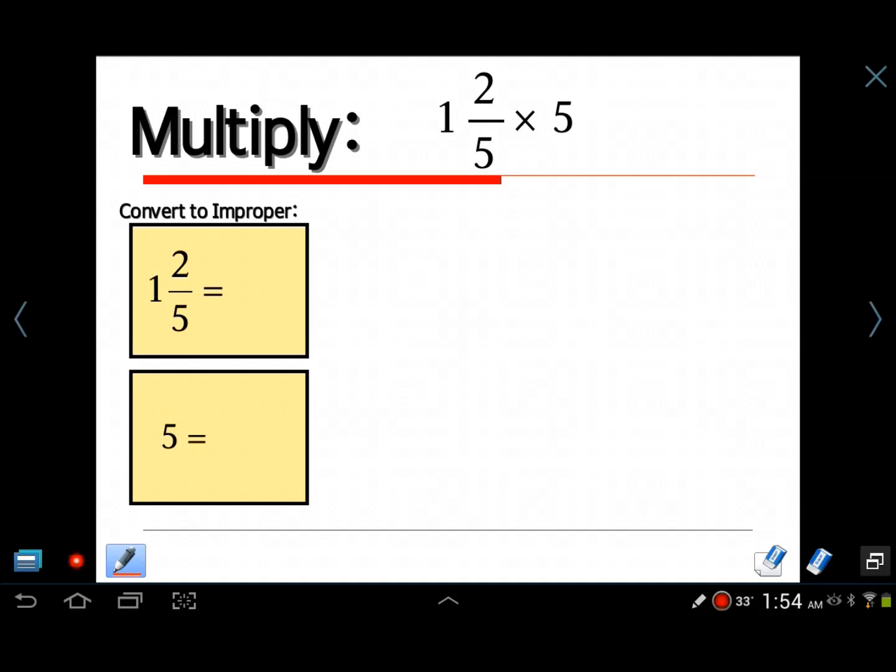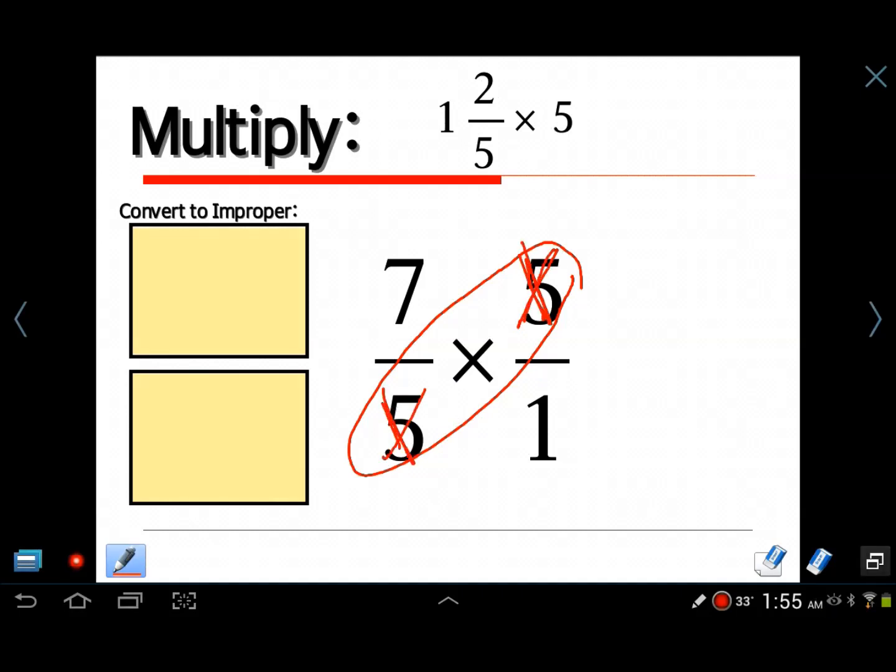Next problem here. So now we have 1 and 2 fifths times 5. A mixed number times a whole number. So the mixed number, 1 and 2 fifths, equals 7 fifths. And 5 equals 5 over 1. So there's what you're going to multiply. Instead of doing 1 and 2 fifths times 5, we're going to do 7 fifths times 5 over 1. So now that we have this rewritten, let's look for cross-cancelling. And right here, the thing that kind of jumps right out at you is the 5s. And whenever you have the same number diagonal from each other, they cancel each other out. 5 itself can be divided by 5. They turn into 1s. So they don't turn into 0s, they just turn into 1s. That's what I mean by canceling each other out. So now we have 1, and then the other set, the 7 and 1, will not cross-cancel. So what are you left with? We're left with 7 times 1, which is 7. 1 times 1, which is 1. And 7 over 1 equals 7. And you're done.